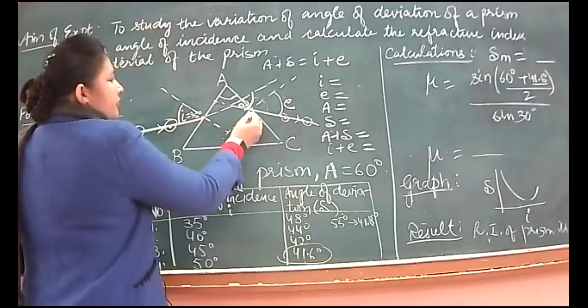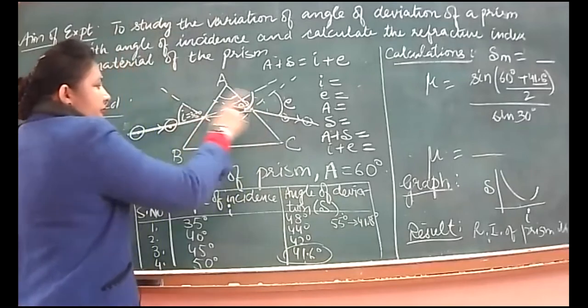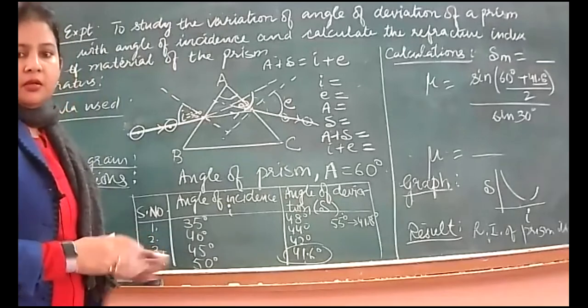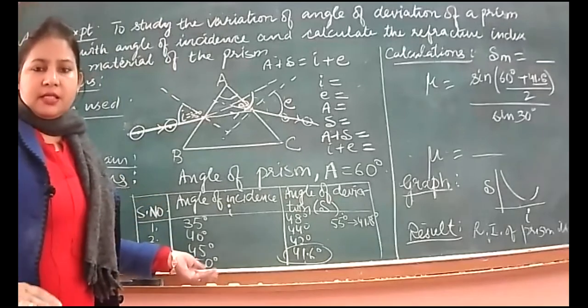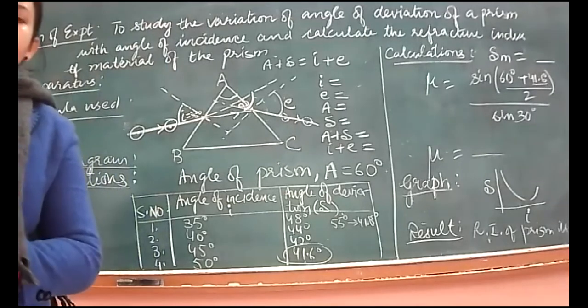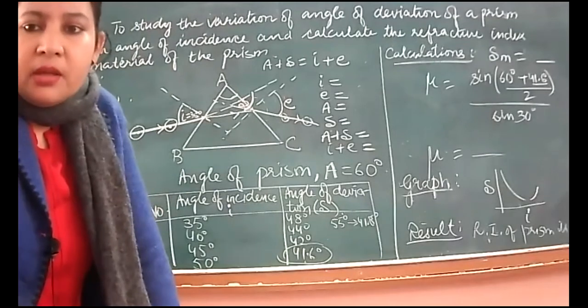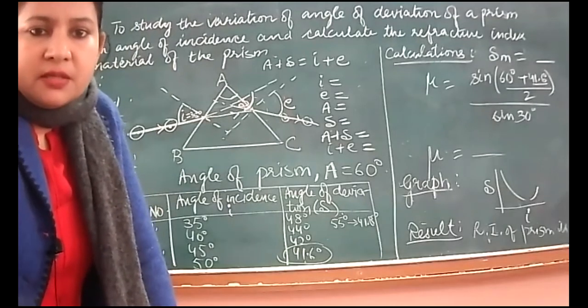And we will do one more thing: we will join emergent ray and incident ray together. This is our refracted ray also. So we should have complete cases with proper arrows, proper labeling, and all the angles marked. We will perform in this way.